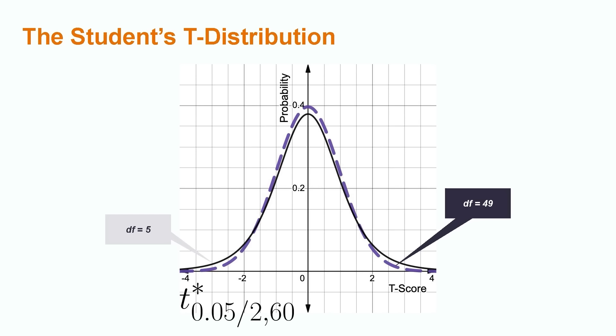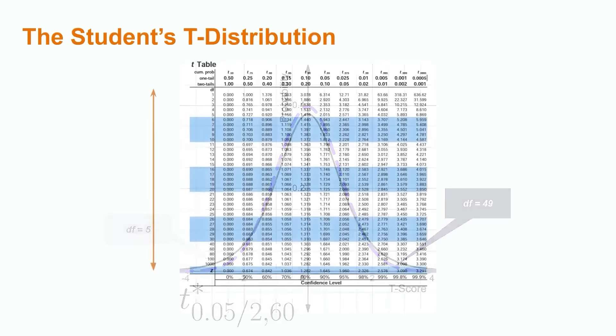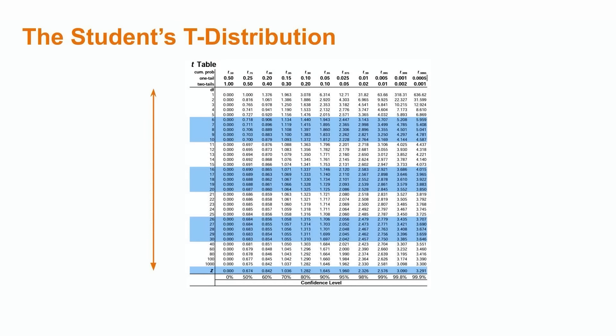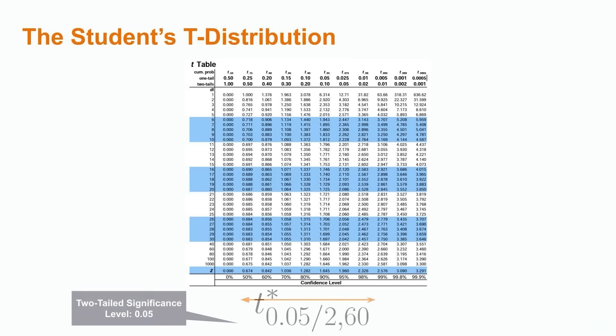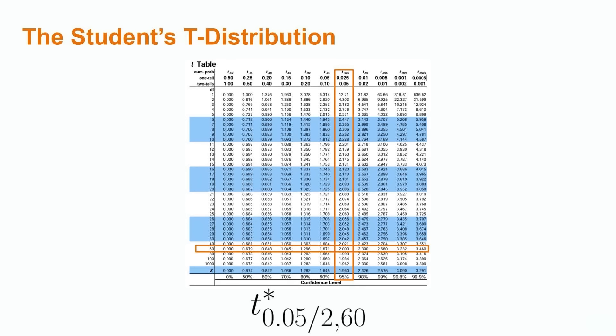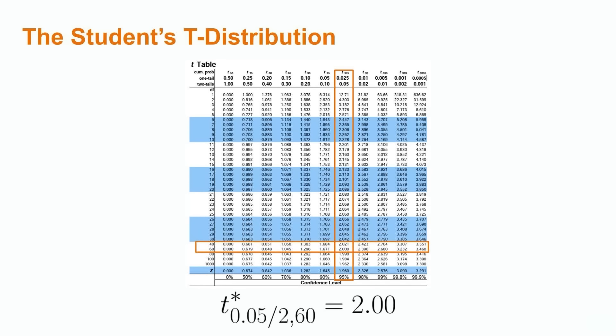For our purposes, we need the t statistic for a 95% confidence interval, or a two-tailed 5% significance level, and 60 degrees of freedom. Let's consult the following t table to find this value. T tables have two critical components: moving vertically will provide values with different degrees of freedom, while moving horizontally will correspond to different significance levels. Zeroing in on the 95% confidence level column and the 60 degrees of freedom row, we see that our t value will be equal to 2.00.